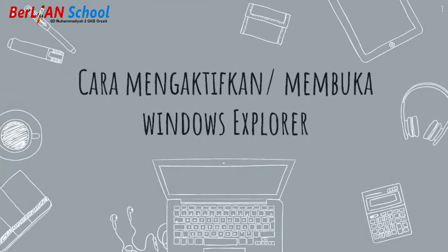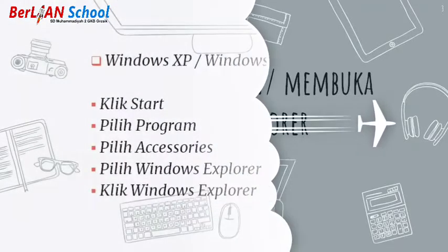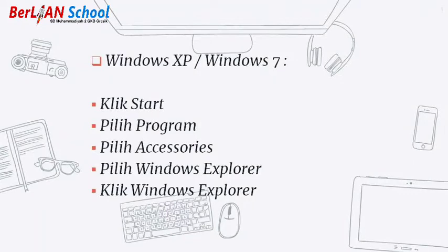Oke anak-anak, yang pertama kita akan mempelajari bagaimana cara mengaktifkan atau membuka Windows Explorer. Jika di Windows XP atau Windows 7, namanya Windows Explorer. Untuk membuka Windows Explorer ada beberapa langkah: yang pertama klik Start, yang kedua pilih Program, kemudian pilih Accessories, pilih Windows Explorer, dan klik Windows Explorer.